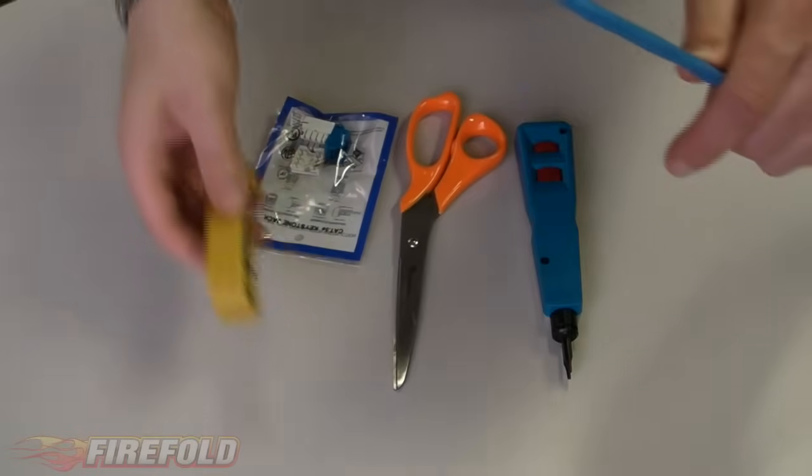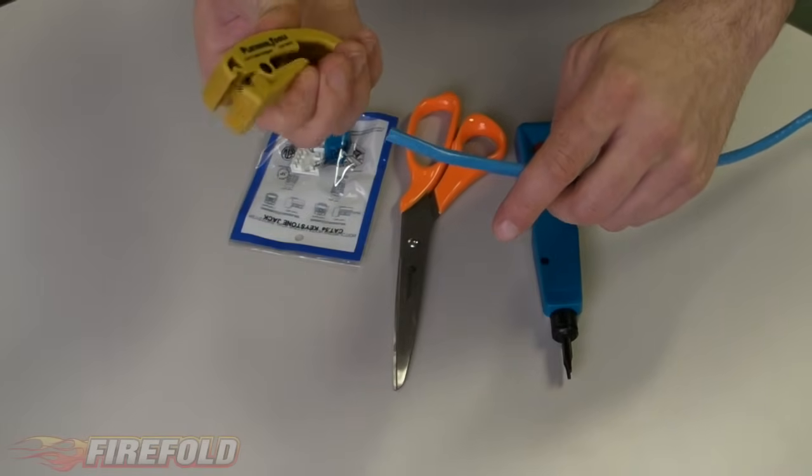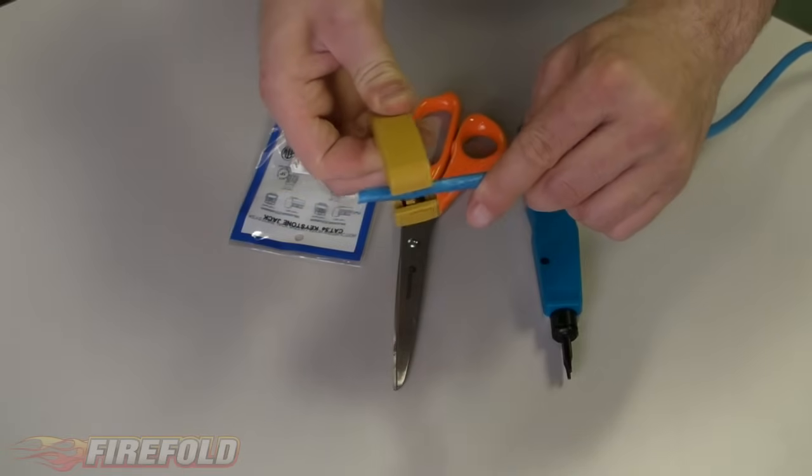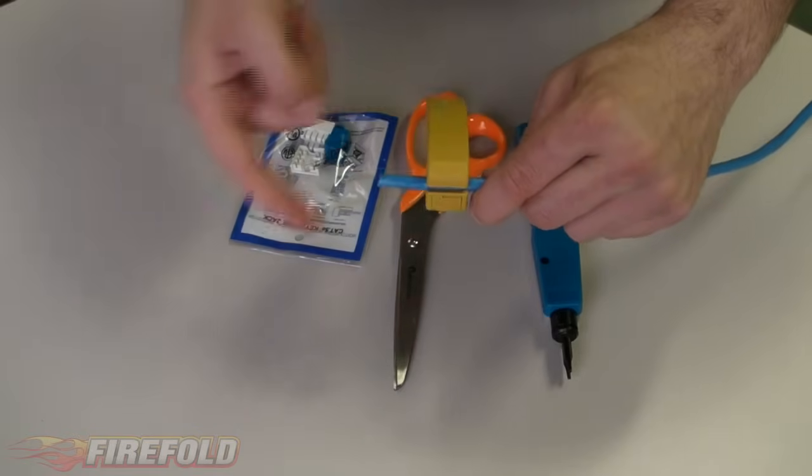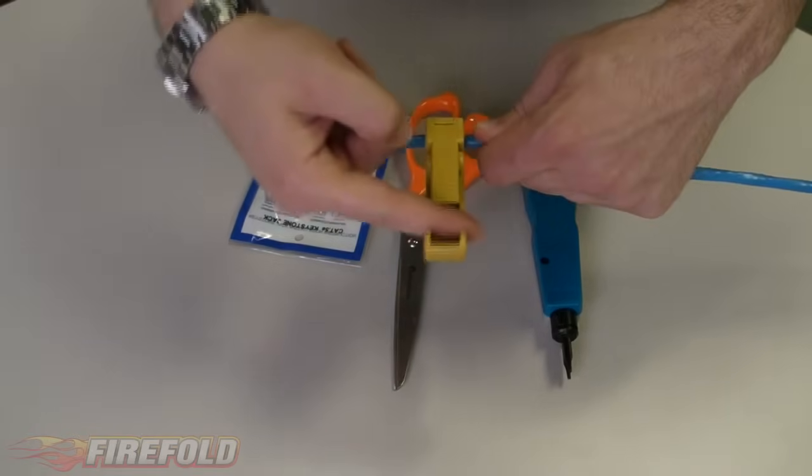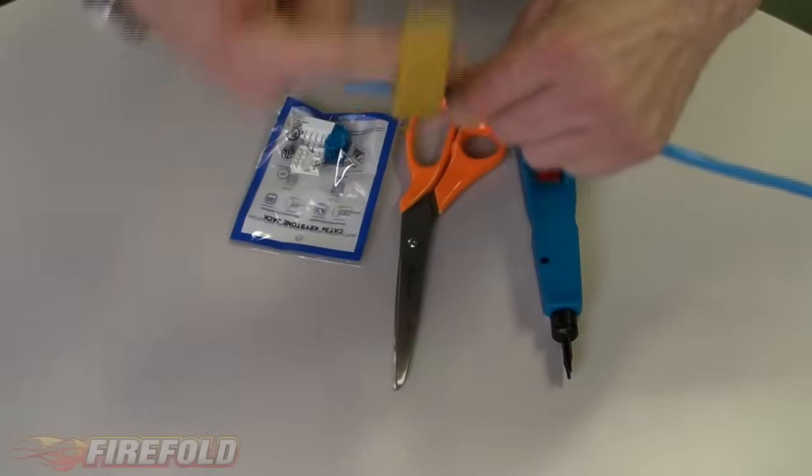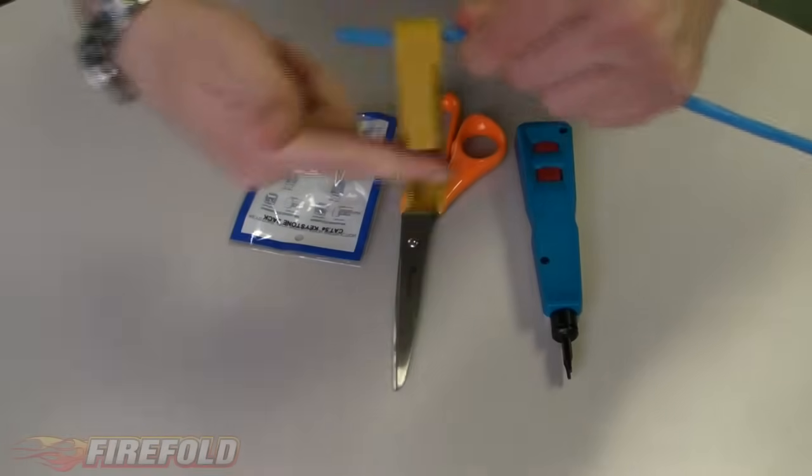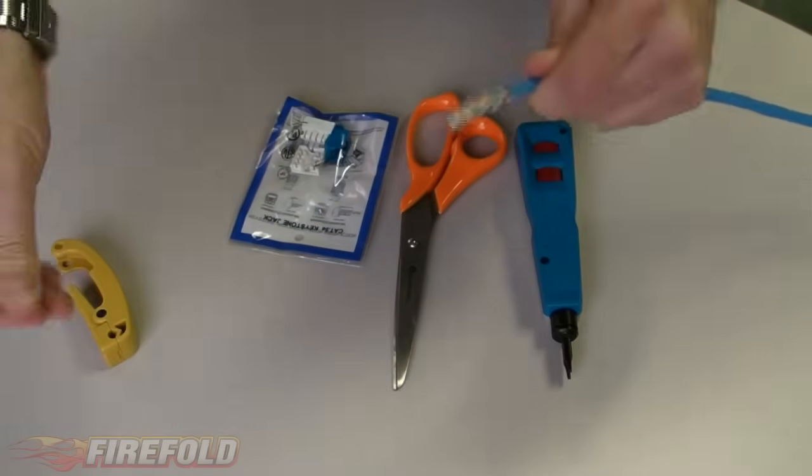Next, you want to take your Cat5 stripper and your Cat5 cable. You open it up by squeezing the back of it, and then slide it in there, slide it about an inch and a half in. You take your finger, put it underneath here, and just twist. This will strip the protective coating off of the cables.